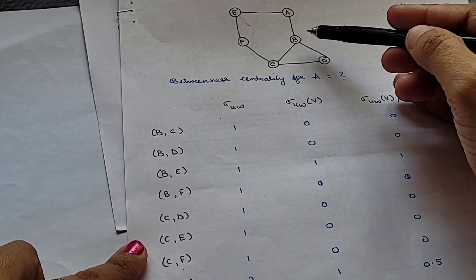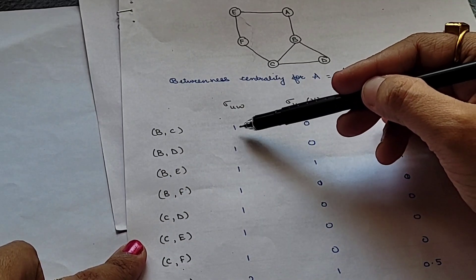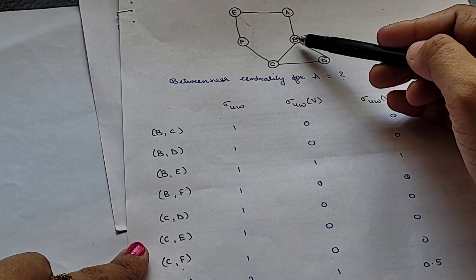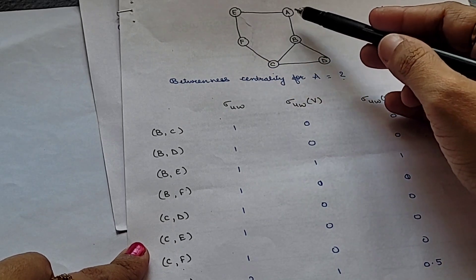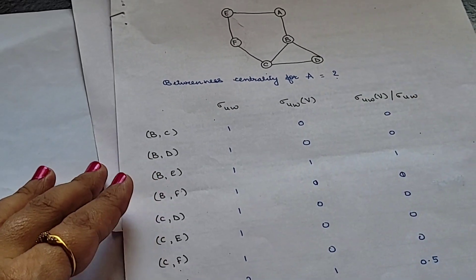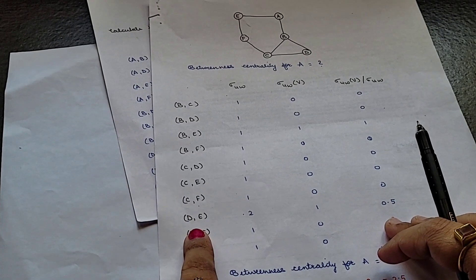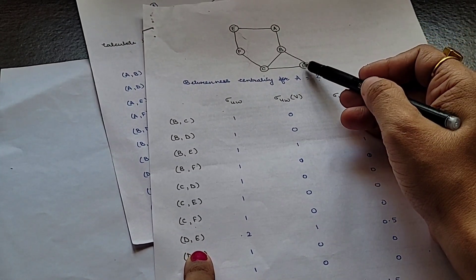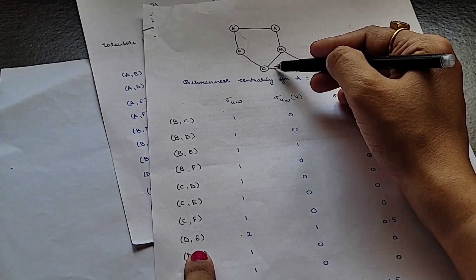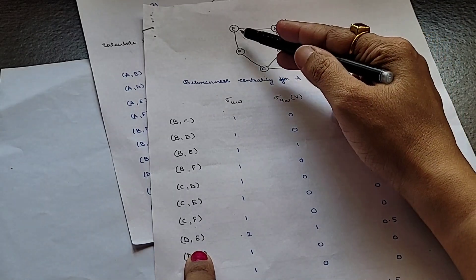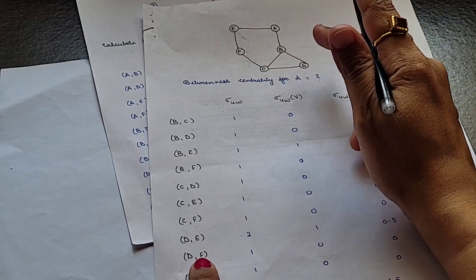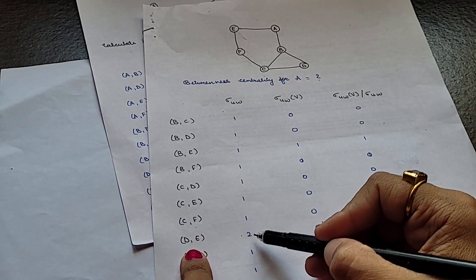Consider B to C: you have a single shortest path, so sigma = 1. For B to D, also a single path, sigma = 1. For B to E, you can traverse B-C-F-E or B-A-E; the shortest path is a single one. For D to E, you can go D-C-F-E or another path — there are two shortest paths from D to E, so sigma(D,E) = 2.